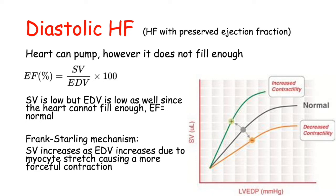In diastolic heart failure, the heart can pump; however, it does not fill enough — that is the issue. Here we will have a preserved ejection fraction, so this is also called heart failure with preserved ejection fraction. We are going to have a decrease in stroke volume, but we will also have a decrease in end-diastolic volume, so the ejection fraction stays normal.